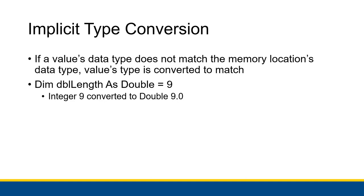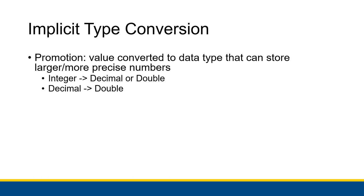There's a process called implicit type conversion, which says if a value's data type does not match the memory location's data type, the value's type is converted to match. For example, if you declare a double variable and set it equal to an integer, Visual Basic will convert that integer to the double 9.0 instead of the integer 9. There are times where implicit type conversion is fine — for example, when you promote values to a data type that can store larger or more precise numbers, like converting an integer to a decimal or double.